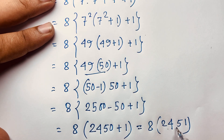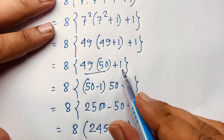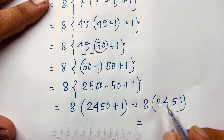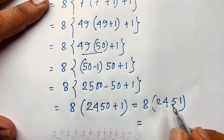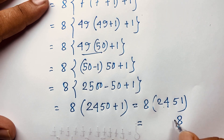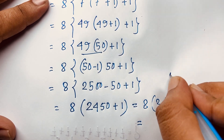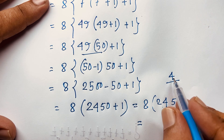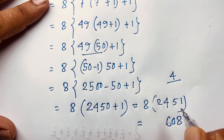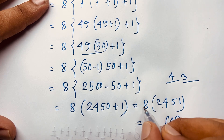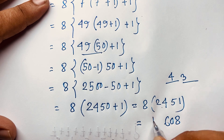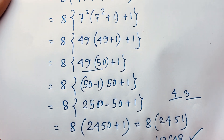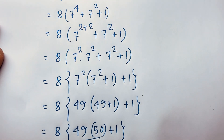Now computing 8 times 2451: 8 times 1 is 8, 8 times 5 is 40 — carry the 4, 8 times 4 is 32 plus 4 is 36 — carry the 3, 8 times 2 is 16 plus 3 is 19. So the final answer is 19,608. Thank you all — if you enjoyed this video, please subscribe to my channel for more interesting videos. Goodbye, take care!